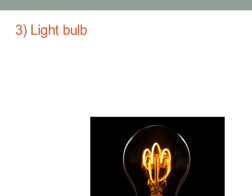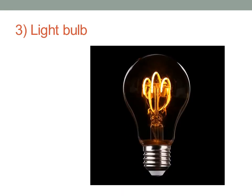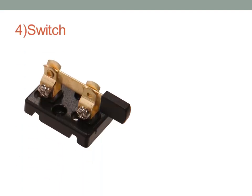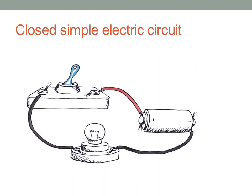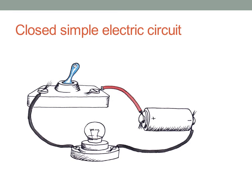The third component is the light bulb. If I have a battery and a wire, this light bulb will light. The fourth thing is the switch — I can use it to turn the light on and off. So this is a closed simple electric circuit. Its components are: the battery — can you see the positive and negative? — a wire, a lamp with a lamp holder, and a switch. Turn on the switch and the light bulb will light; turn it off and it will be off.